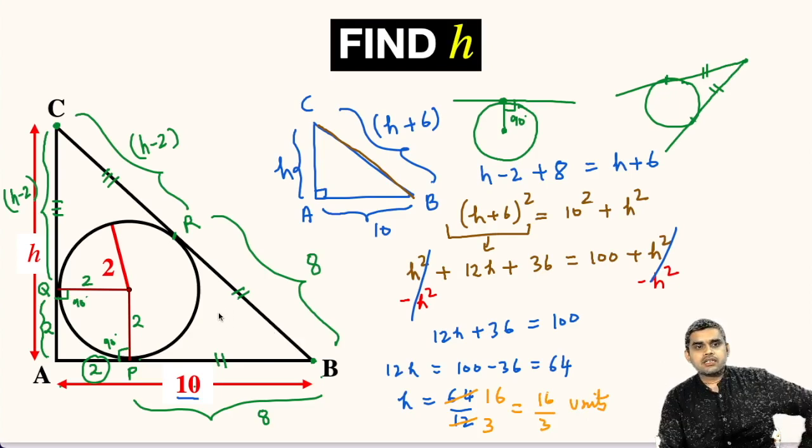The height h, or the side AC of this triangle ABC, will be 16 by 3 units.